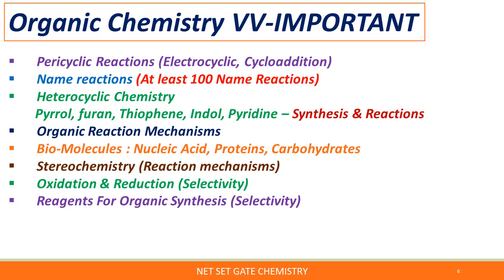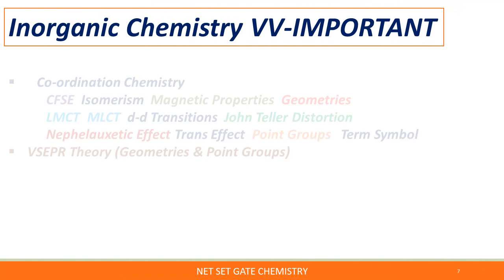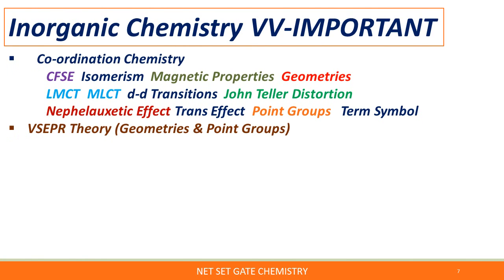You have to remember the selectivity of particular reagents — for example, Wilkinson's catalyst is used for hydrogenation of alkenes and its selectivity. Now for inorganic chemistry, very important topics first are coordination chemistry topics: crystal field stabilization energy, isomerism, magnetic properties of coordination compounds, geometries of coordination compounds, ligand-to-metal and metal-to-ligand charge transfer, d-d transitions, Jahn-Teller distortion.